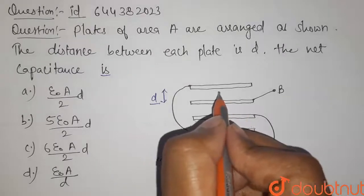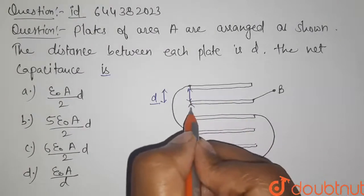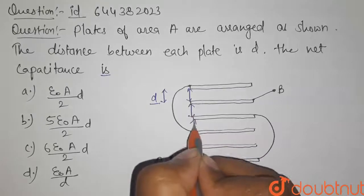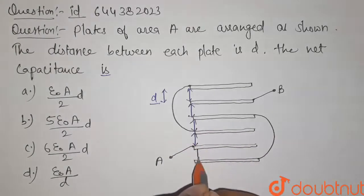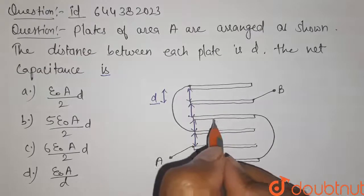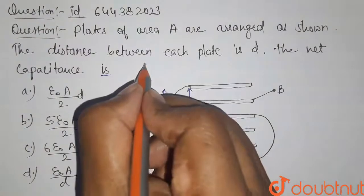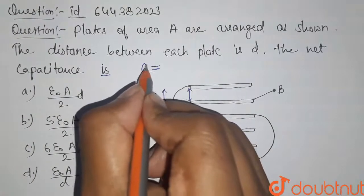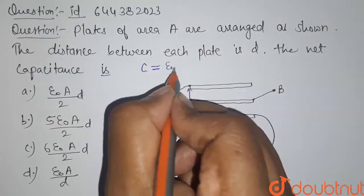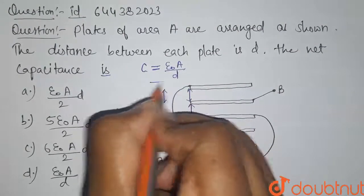We can see that this is one capacitor, this is second, this is third, this is fourth and this is fifth. So there are overall five capacitors present. Let us take the value of one capacitance as C, which is given by epsilon naught A divided by D.